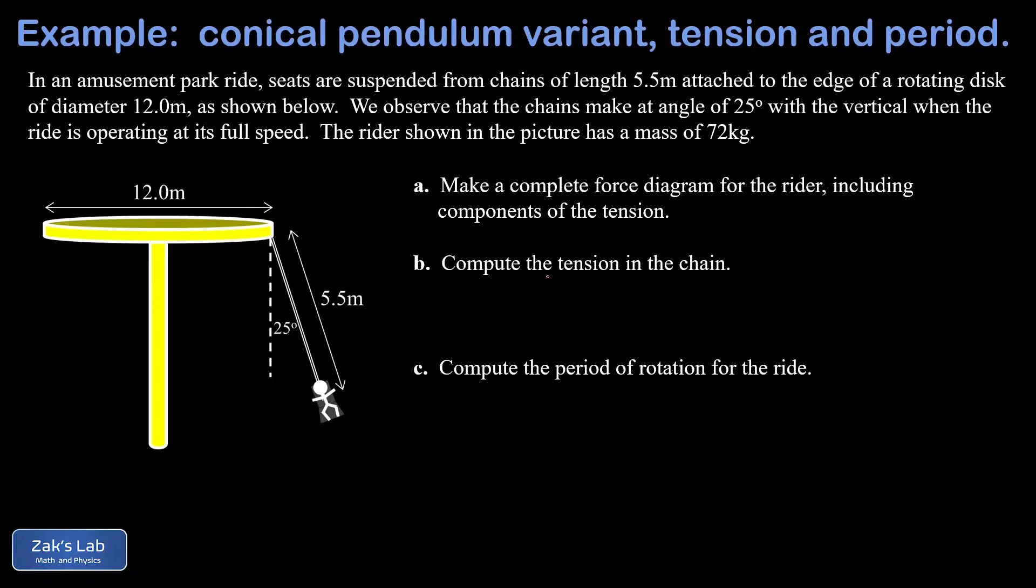We're told our chains are 5.5 meters long, and when this ride is moving at its cruising speed, those chains make a 25 degree angle with the vertical. The rider in this picture has a mass of 72 kilograms. This rider is going to move along on a horizontal circular path, so at some point we're doing a uniform circular motion analysis.